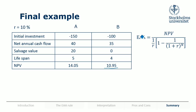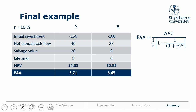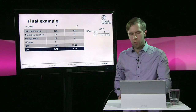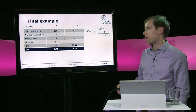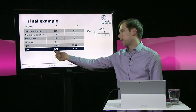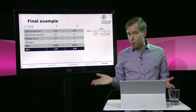Now we take each NPV and divide it by the annuity factor to get the equivalent annual annuity. The equivalent annual annuity of A is 3.71, and the equivalent annual annuity of B is 3.45. Since we assume this can be repeated, we focus on the highest EAA: A has 3.71 and B has 3.45, so A is clearly the better investment. In this case, NPV also agreed, but that's not always the case.